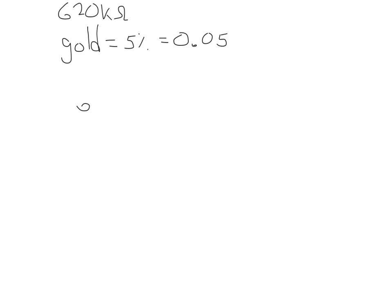Basically, what we're going to do is we're going to take our 620 kiloohms and we want to find 5% of it. So we're going to multiply by 0.05. That's the 5%. And when we do that, 5% of 620 kiloohms is 31 kiloohms.